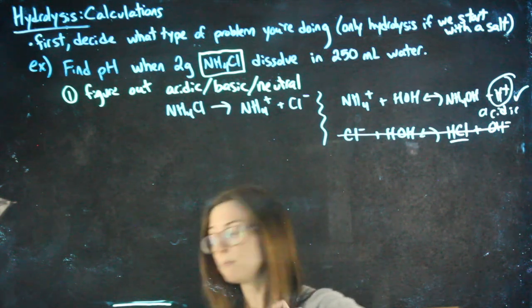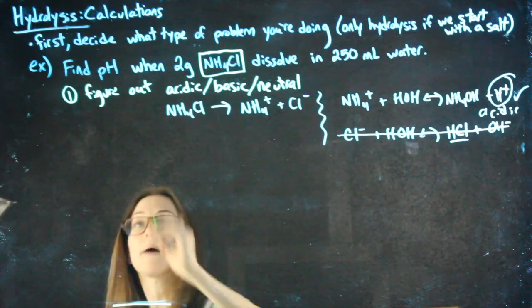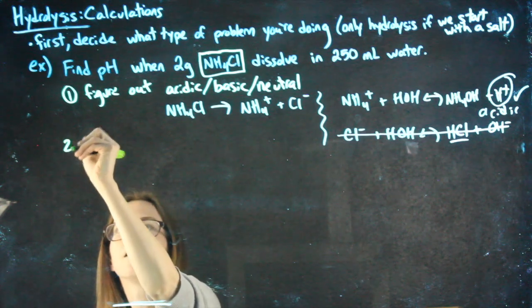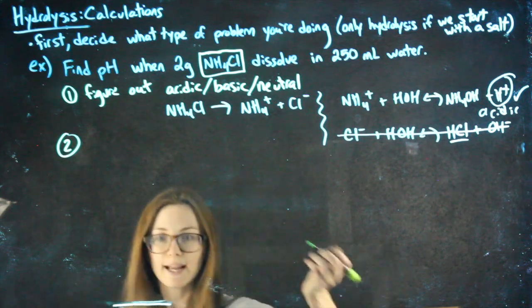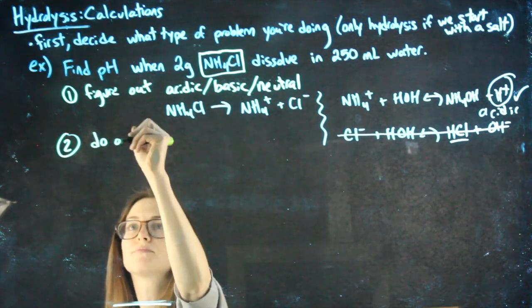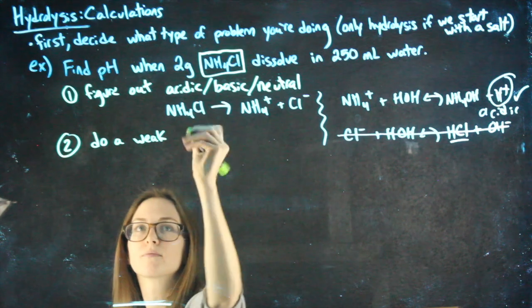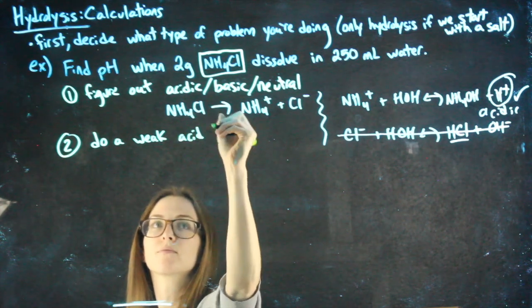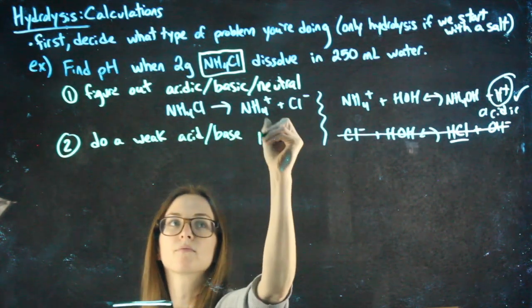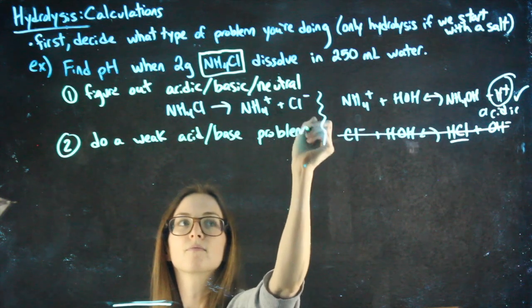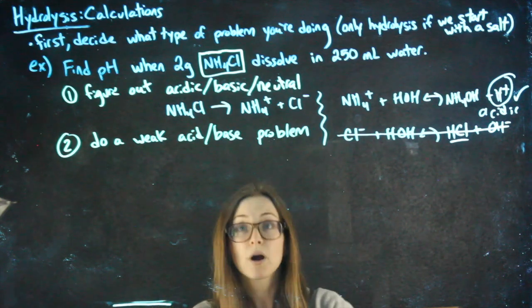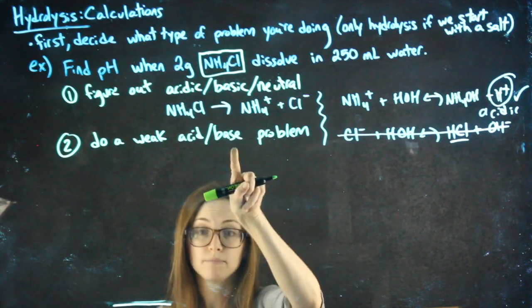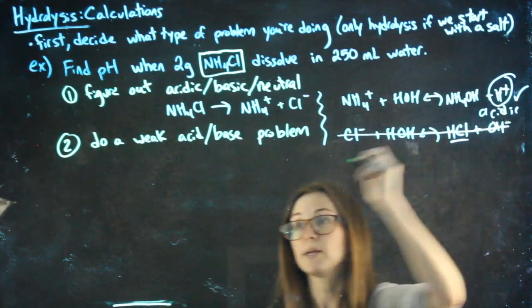Then, my second step is once I know if I have an acidic or basic solution, I'm going to do a weak acid or base problem. For a weak acid or a base problem, how do you know if you're going to do a weak acid or a weak base problem? It all depends on the outcome from here.